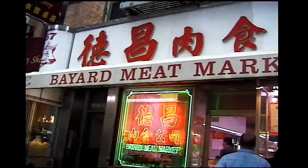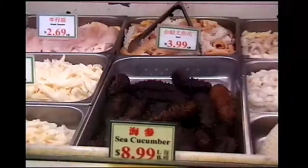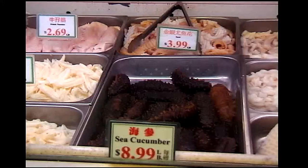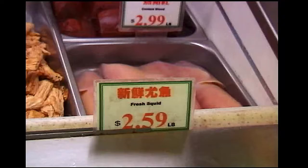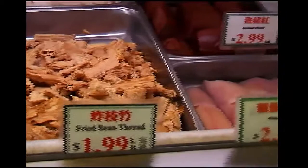Capacity and time. Let's look at a practical problem dealing with capacity. You visit Bayard Meat Market in Chinatown in New York City and you want to buy sea cucumbers for $8.99 a pound and some fresh squid for $2.59 a pound. If you buy 2.4 pounds of sea cucumbers and 3.8 pounds of fresh squid, how much do they cost altogether?